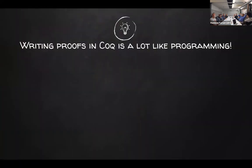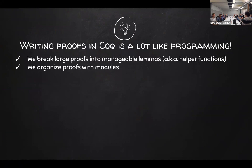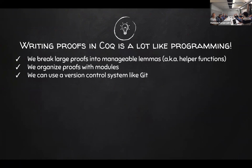Writing proofs in Coq is actually very similar to programming — not just in theory, not just this Curry-Howard thing, but in practice too. You write a large proof, but you don't write it all in one go — you break it up into manageable pieces. In math we call those lemmas, but in programming we call them helper functions — same idea. We organize big proofs in modules, split them across files. We can use Git, version control systems; it's just text files. We can have a CI system: when you push code to a branch, it runs the Coq compiler and checks that you don't make any mistakes.